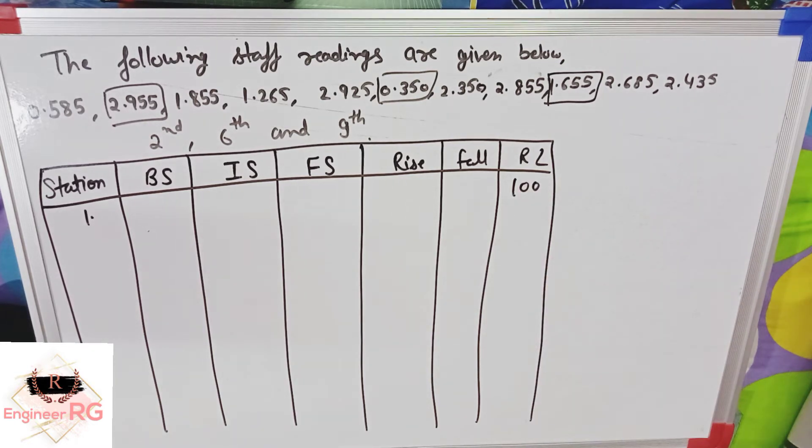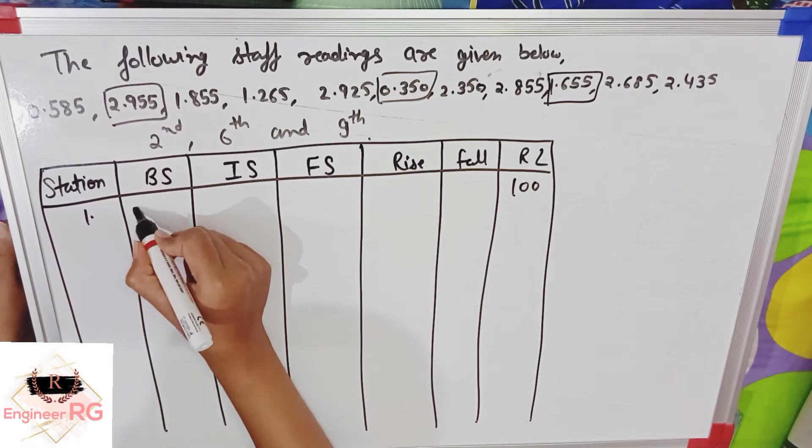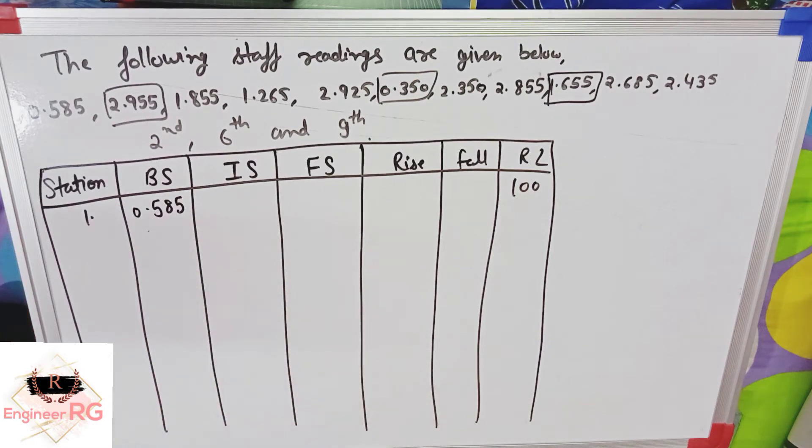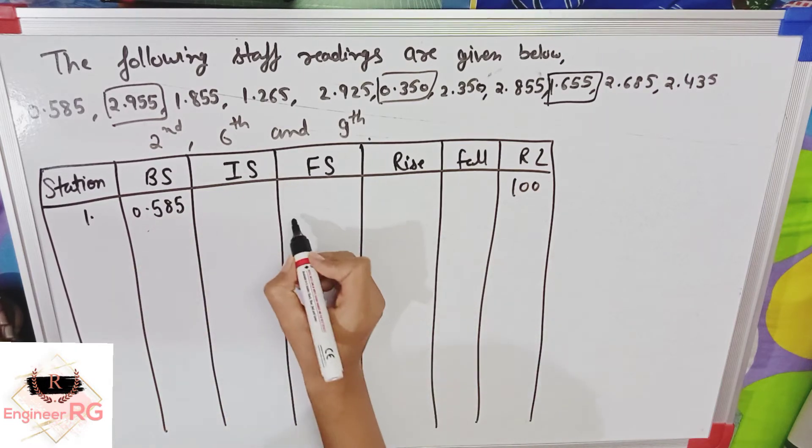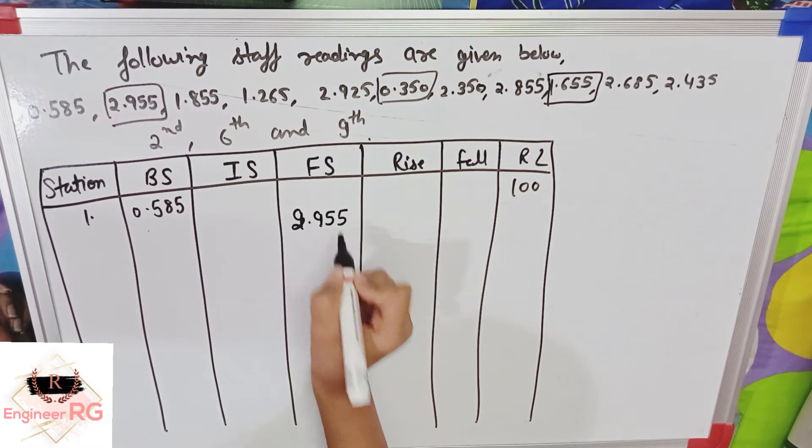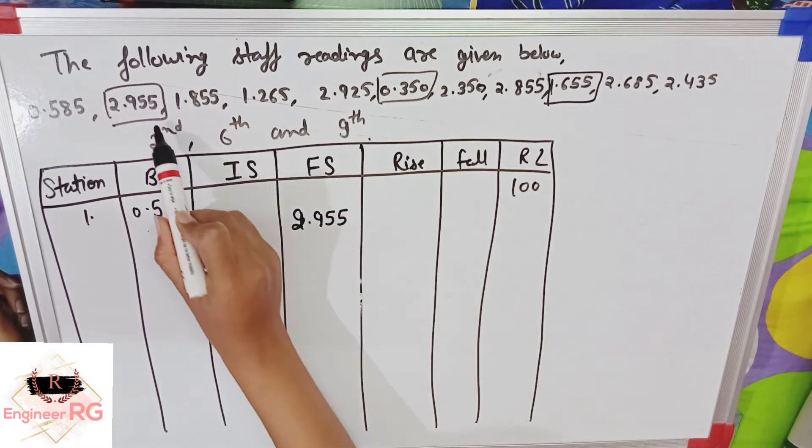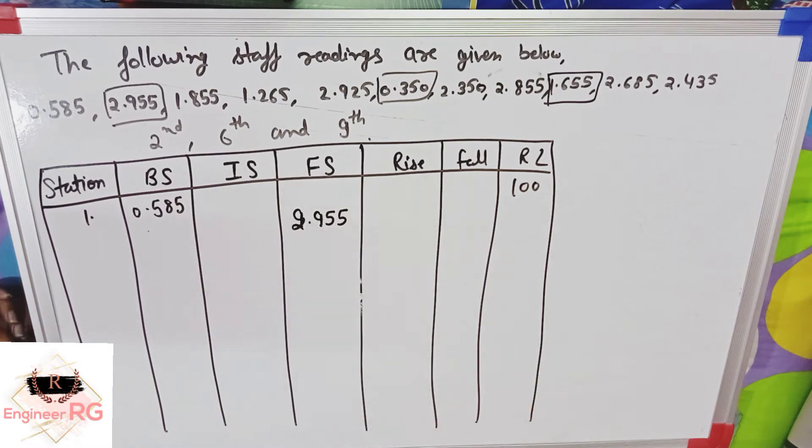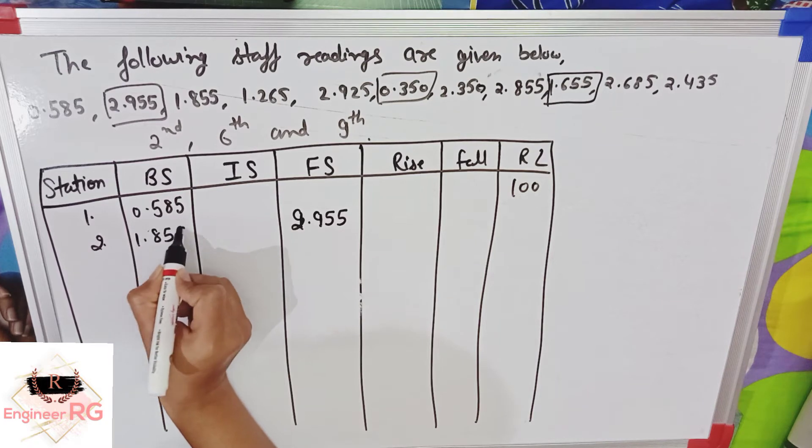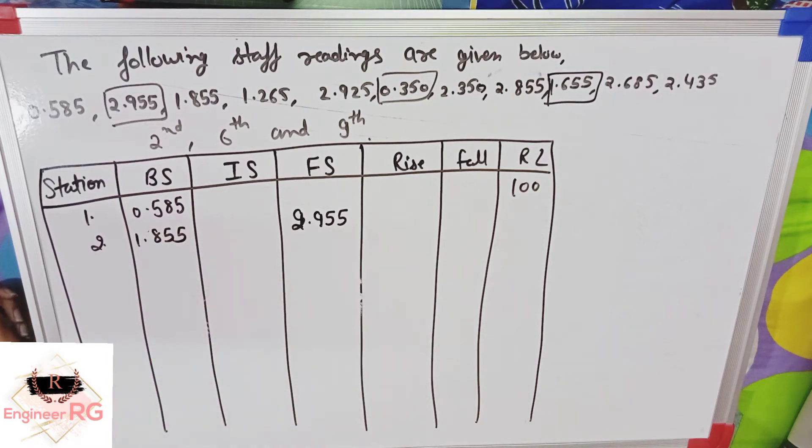So, what will we write in BS? The first reading is always back-side. So, 0.585 is back-side. Now, the reading is removed from the staff. What is it? Fore-side. So, 2.955 is written in fore-side. Then, fore-side is always back-side. So, 1.855 will come back-side.